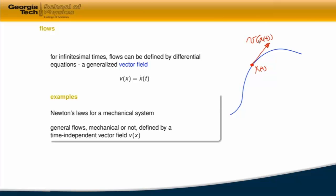Flows are described by a generalization of what we mean by velocity in very general settings. We just take the first derivative with respect to time — that's a parameter of this curve — and we call it the velocity field.